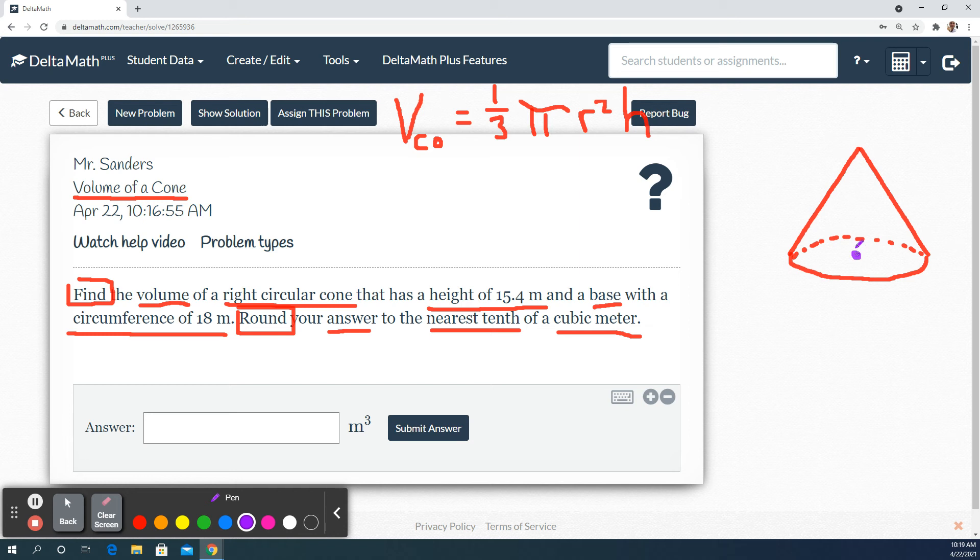So straight up from the center is height equals 15.4 meters. And then a base with a circumference of 18 meters. So this base has a circumference of 18 meters.